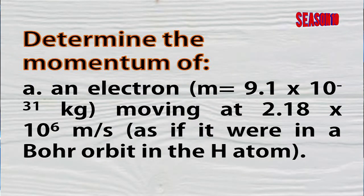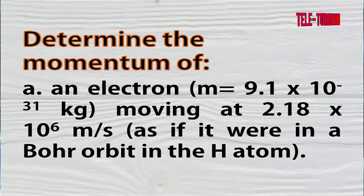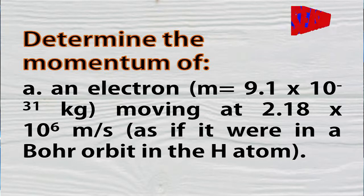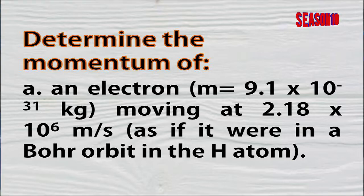Let's try to answer this word problem. Determine the momentum of an electron having a mass of 9.1 x 10 raised to negative 31 kilogram, moving at 2.18 x 10 raised to 6 meter per second, as if it were in a Bohr orbit in the hydrogen atom.